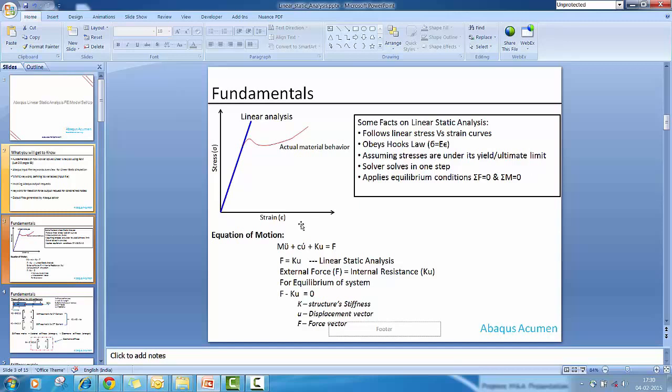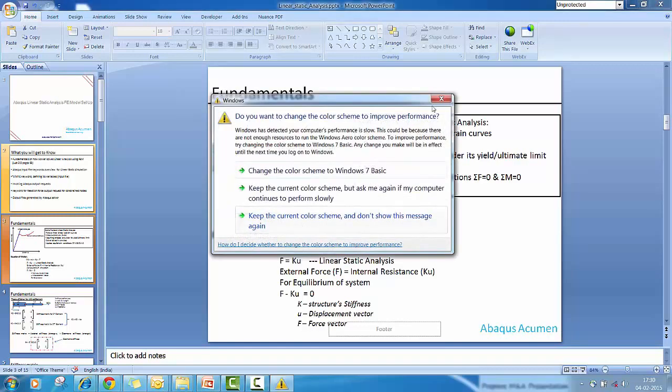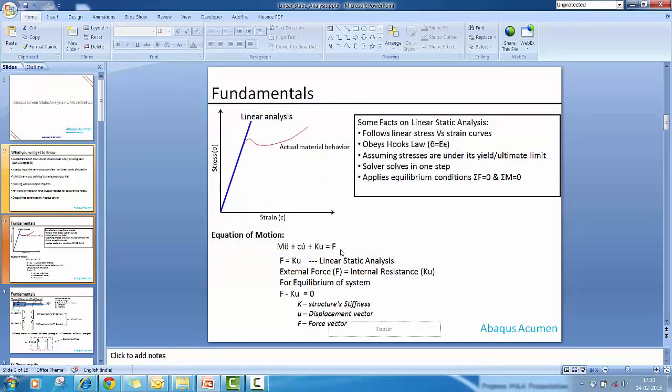Let's discuss equation of motion. This is a very famous equation: mass times acceleration plus velocity damping factor plus stiffness times displacement equals external force. When we discuss linear static analysis, we're not considering inertia effect and damping effect. Linear static simulation involves only the stiffness part and displacement which equals external force.